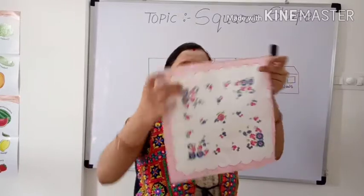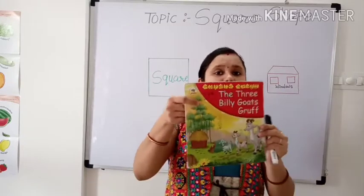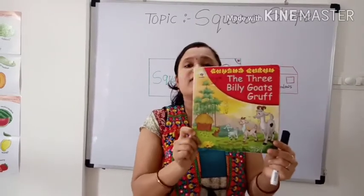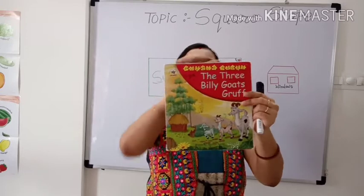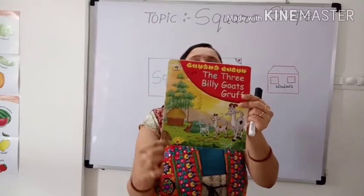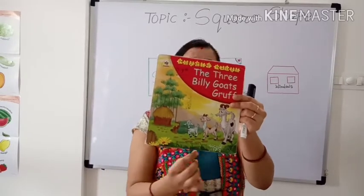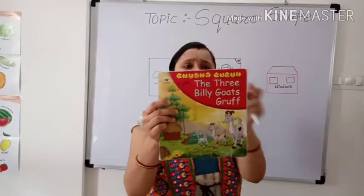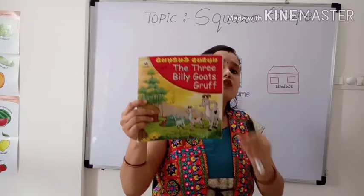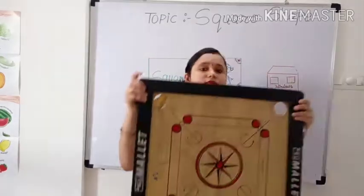Four. One, two, three and four. Look here. This is also in square shape, and it has four equal sides. Four equal sides. Equal means same — equal means same sides. One, two, three and four. That is also in square shape.